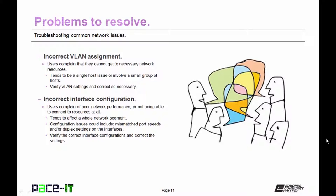Incorrect interface configurations will also create network issues. Users may complain of poor network performance or not being able to connect to resources at all. This issue tends to affect a whole network segment. Configuration issues could include mismatched port speeds and or duplex settings on the interfaces. Verify the correct interface configurations and correct the settings.